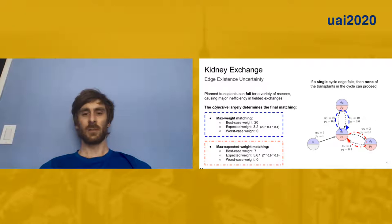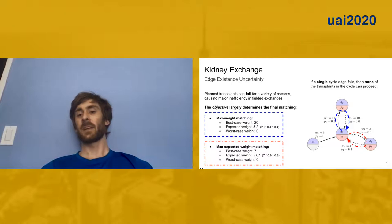It's important to note that the objective that we choose to optimize in kidney exchange has a big impact on the final matching. Just to illustrate, I have an example exchange over here on the right, where these dotted edges are somewhat uncertain, we have probabilities of failure associated with each of those. For example, this two cycle of vertices here, each edge has a weight of 10 and a probability of failure of 0.6. So it's very unlikely that this cycle will actually be able to complete, although it has a very high weight.